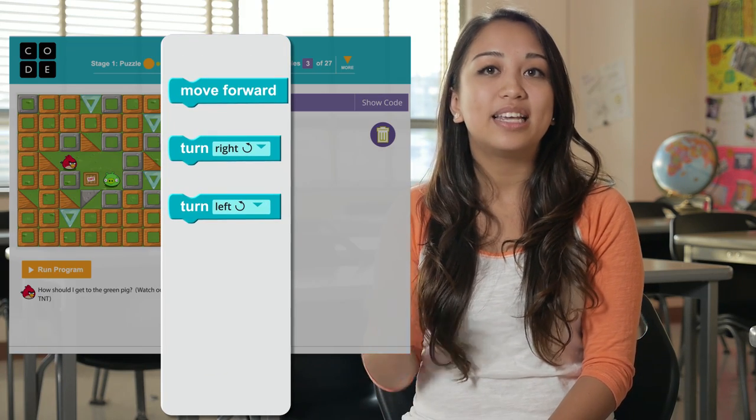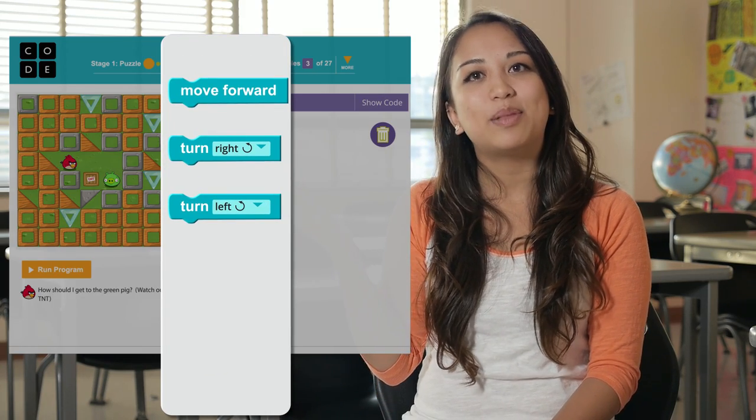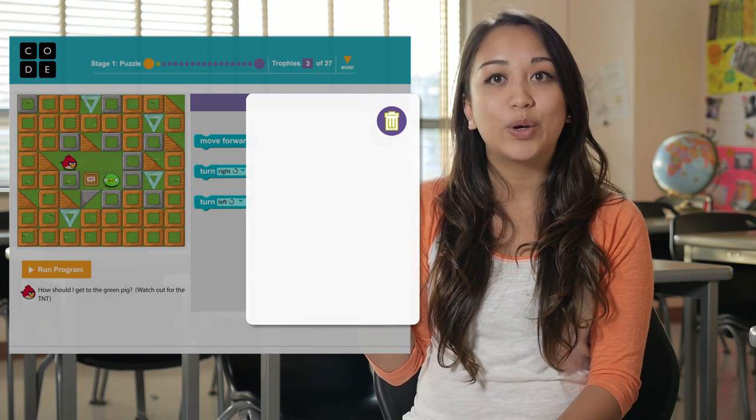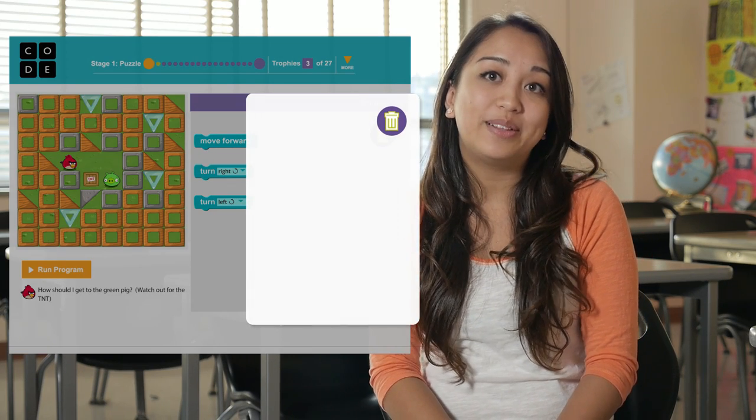This middle area is the toolbox and each of these blocks is a command that the bird can understand. The white space on the right is called the workspace and this is where we'll build our program.